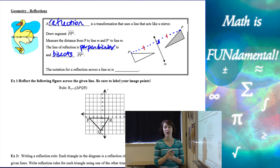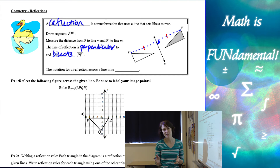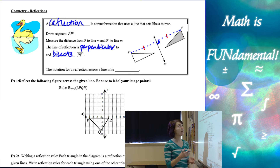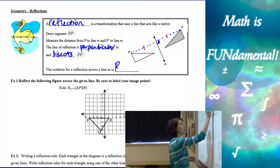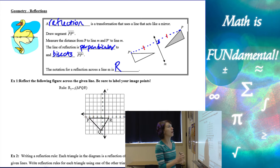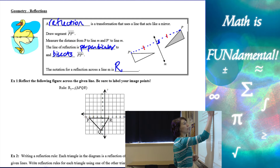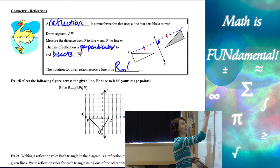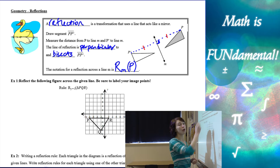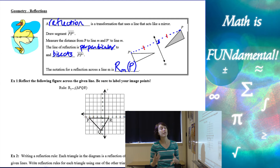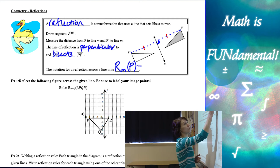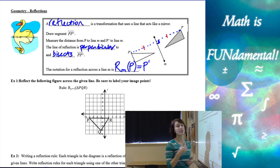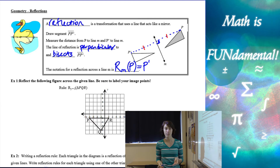Now, probably the trickiest part about transformations is learning all the different types of notation, so you'll want to really take note of this. Notation for reflection across a line M is a capital R — very important that you draw a capital R. Then we have the little letter M representing our line of reflection. Then in parentheses we have our original pre-image point or figure, followed by equals, and then what it's mapped to — where did it go. P went to P prime.